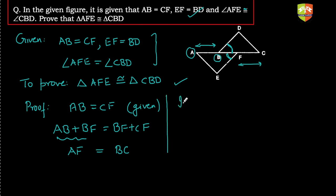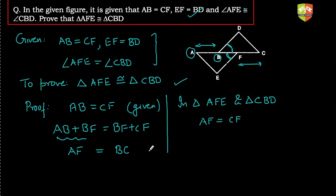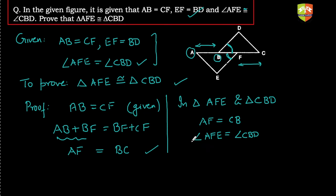Now in triangle AFE and triangle CBD, we have three conditions: first, AF is equal to CB (proved above); second, angle AFE is equal to angle CBD (already given); third, EF is equal to BD (also given). So all three SAS conditions are satisfied.